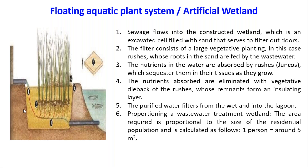This diagram clearly gives the stepwise procedure done in this treatment system. The first step: sewage flows into the constructed wetland, which is an excavated cell filled with sand that serves to filter. The yellow part in the diagram represents this wetland where sewage flows in. The second stage involves floating plants present in that wetland.